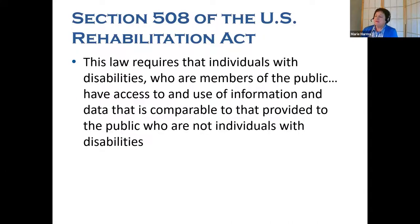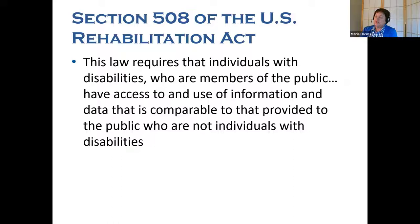Section 508 of the U.S. Rehabilitation Act specifically requires that individuals with disabilities who are members of the public seeking information or services from a federal agency have access to and use of information and data that is comparable to that provided to the public who are not individuals with disabilities, unless an undue burden would be imposed on the agency. Obligations to comply with Section 508 can be extended to state and local level participation in certain federal programs, and that includes libraries.